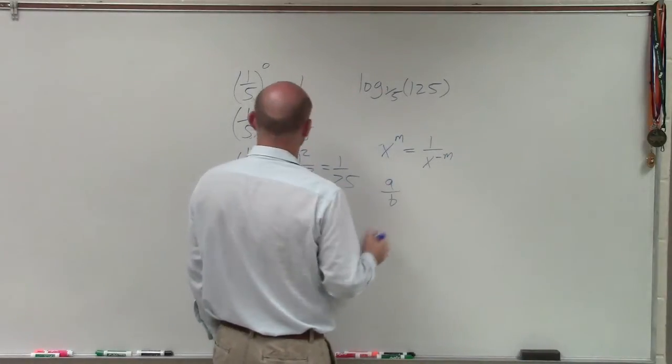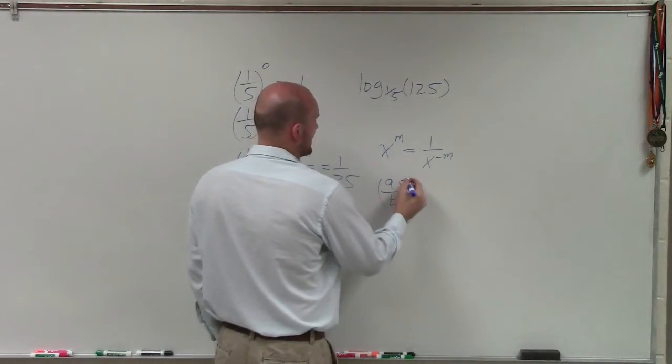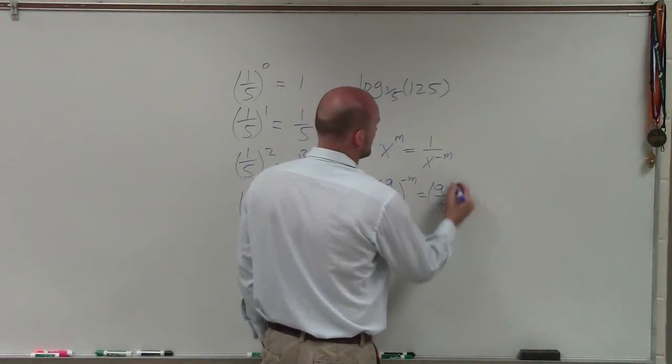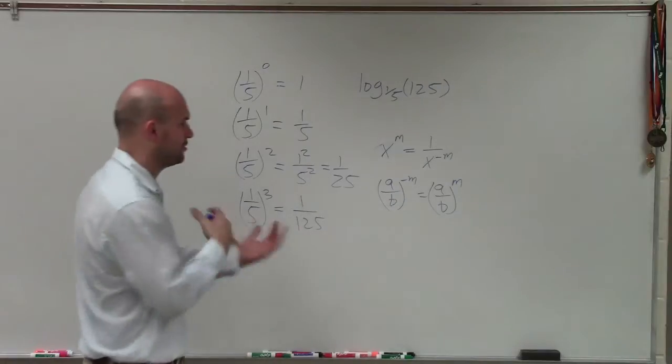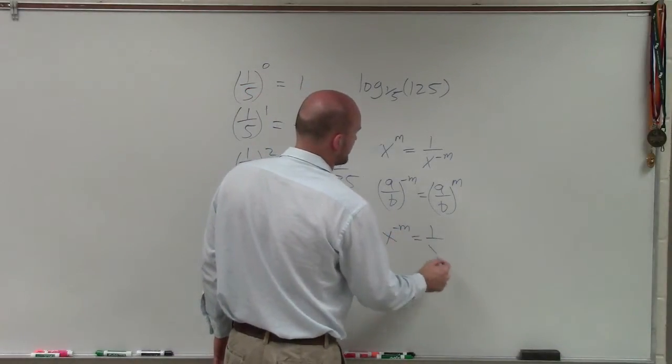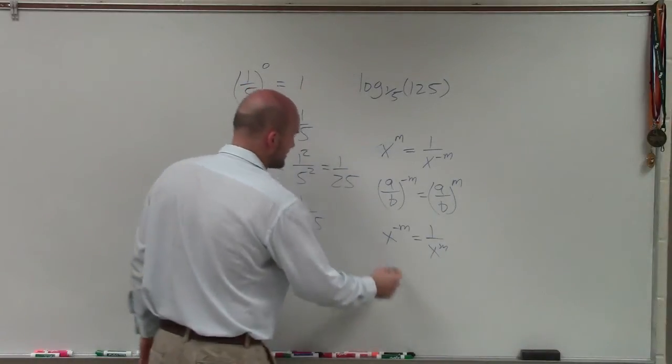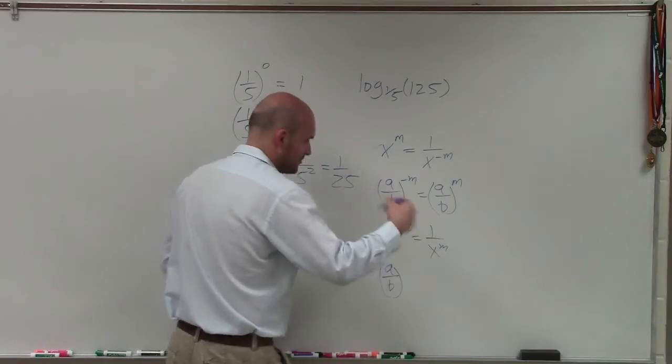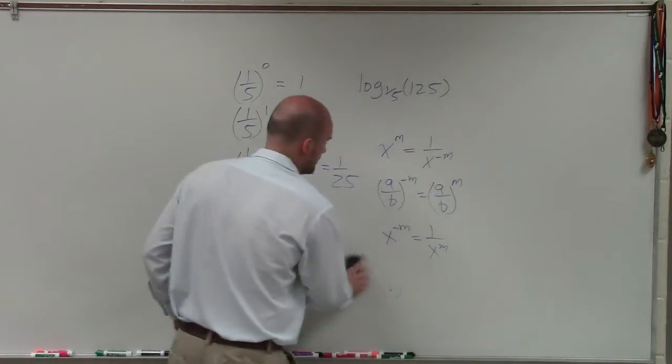And if I have (a/b) to the negative m, that equals (a/b) to the positive m. And I can go back and forth with each one of these rules. So x to the negative m equals 1 over x to the m. I could do (a/b) to the m. That's still just going to equal either side.